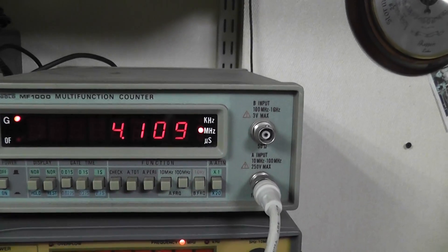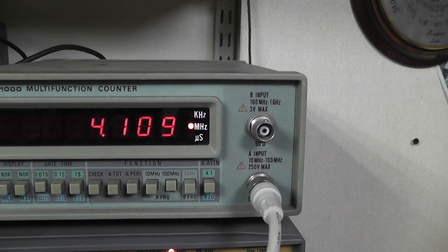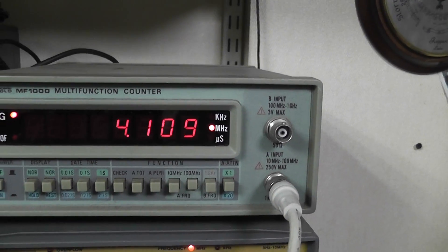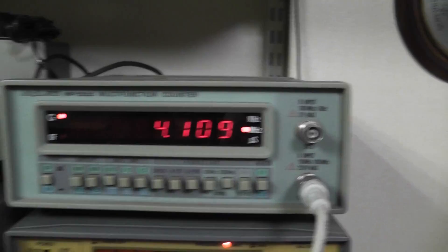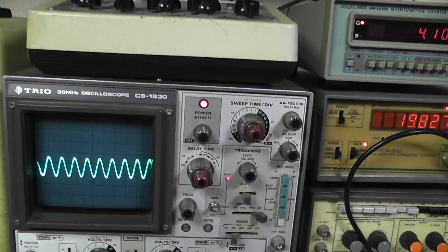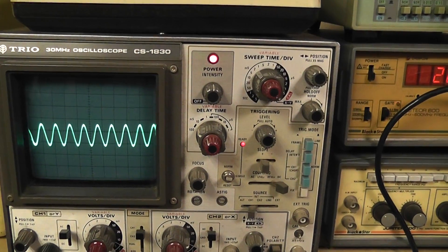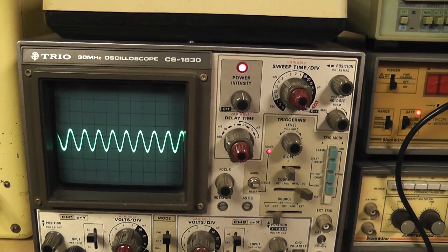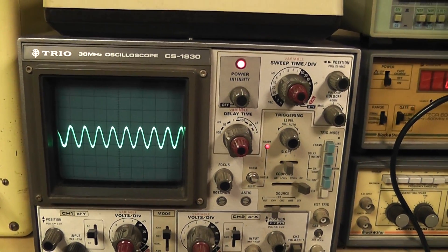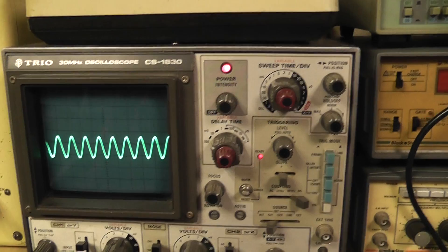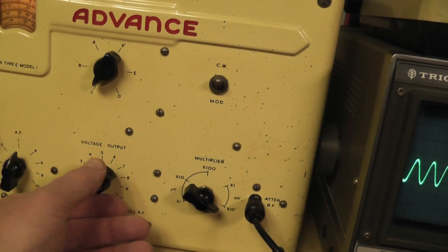This frequency here, 4.1 Megs, is the local oscillator. If we look at the scope at the moment, we've got the trace of 4 Megs. This is the output of the mixer. So if I now turn up the signal generator...